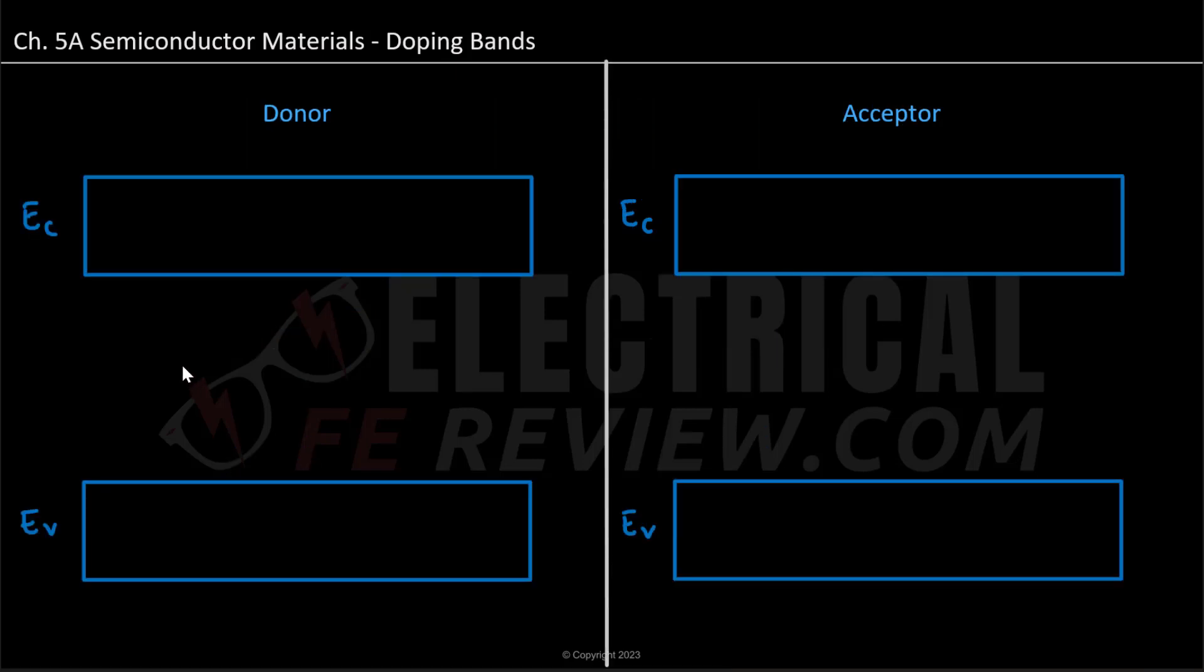So we can recall from previous videos that we have our energy bands, where our top band is conduction, which is typically full of electrons. And we have our valence band, which is typically full of holes.